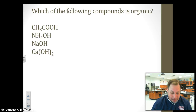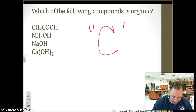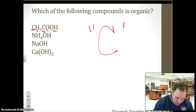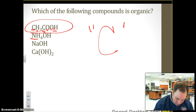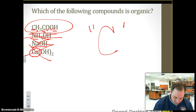Which of the following compounds is organic? Organic compounds contain the element carbon. Here I have carbon, hydrogen, carbon, oxygen, oxygen, hydrogen — this one obviously has carbon in it. The next one, no carbon. The next one, no carbon. This one has a C, but the A goes with the C — that's actually calcium, so no carbon. The first compound is organic.